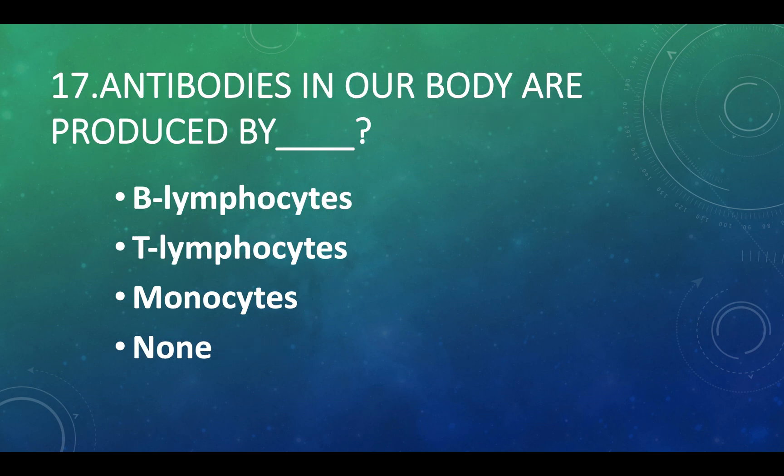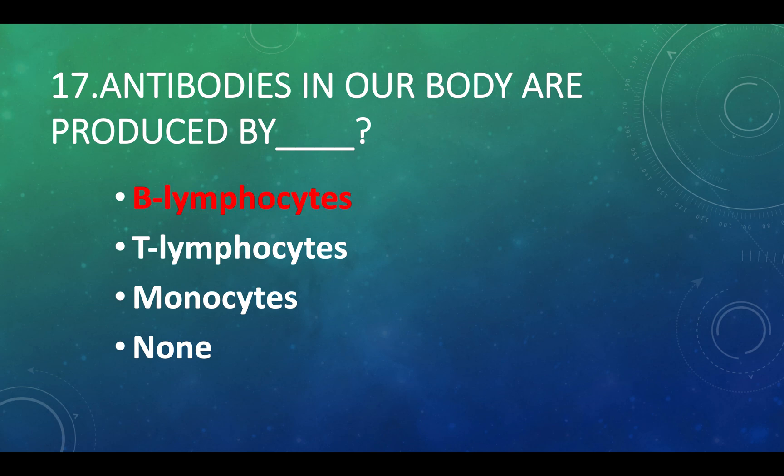Antibodies in our body are produced by: Option A — B-lymphocytes, Option B — T-lymphocytes, Option C — monocytes, Option D — none of these. Answer: Option A, B-lymphocytes.